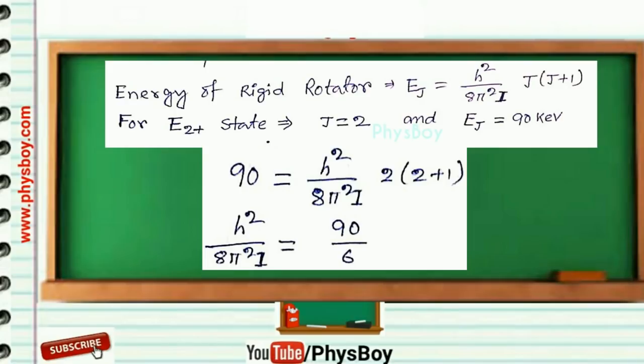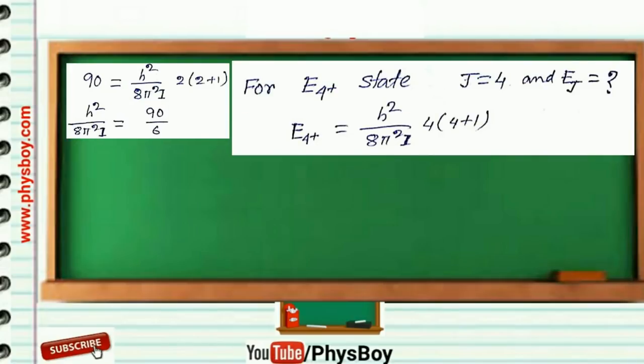Now we have to find the energy of 4+ state. For this state, value of j is 4. Again from the energy expression of the rigid rotator, we can write E4+ = h²/(8π²I) times 4(4+1).